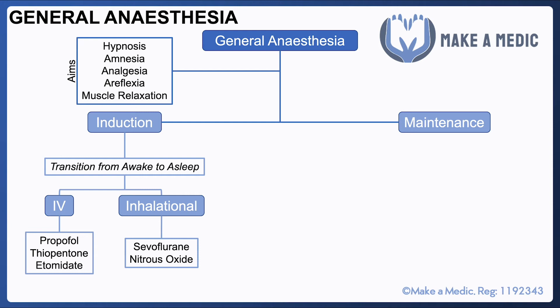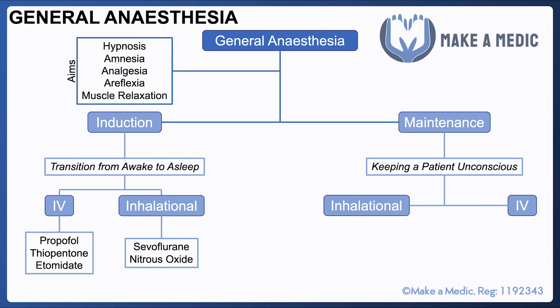These agents tend to work by upregulating the inhibitory systems within the brain. The GABAergic neurons are the mainstay of dampening down various forms of brain activity, and many of these anesthetics work by enhancing GABA activity. Maintenance refers to keeping a patient unconscious once they have entered that state.